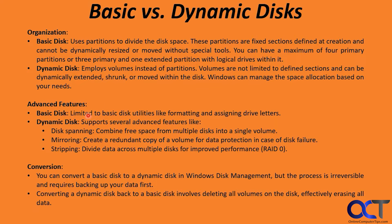For advanced features: basic disks are limited to utilities like formatting and assigning drive letters. Dynamic disks offer additional options such as disk spanning — combining free space from multiple disks into a single volume for performance gains. Mirroring for backup: two drives where writing to one automatically writes to the other, so if one crashes the other takes over and you can rebuild with a new drive. And striping — not stripping — divides data across multiple disks for improved performance, known as RAID 0. There are many RAID versions for different types of redundancy and performance.